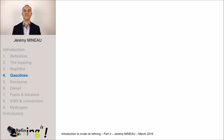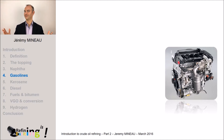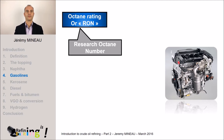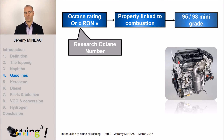I propose now to see the way to elaborate gasoline from naphtha. But what are the main properties for a gasoline fuel? There are two main properties to be respected to satisfy the European regulations. The first one is called the RON — Research Octane Number. This property is linked to the combustion of the gasoline in the engine. The regulation imposes the RON to be above 95 or 98 in Europe, and it is this figure which you can find at gas stations.